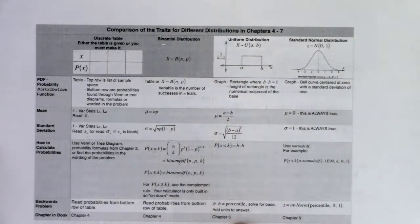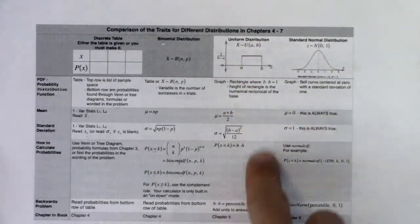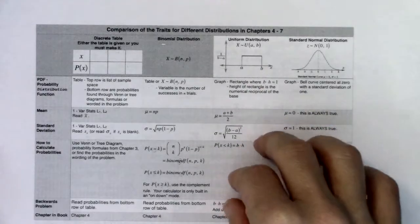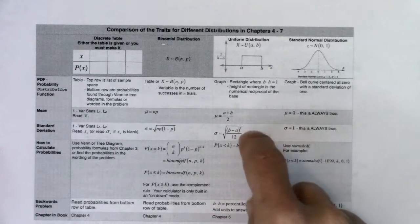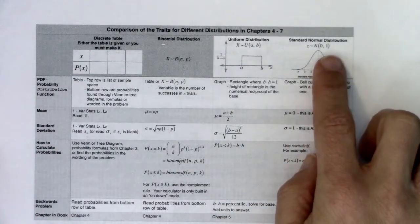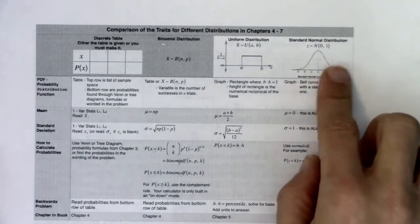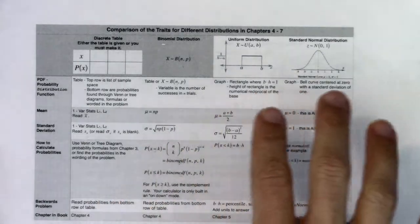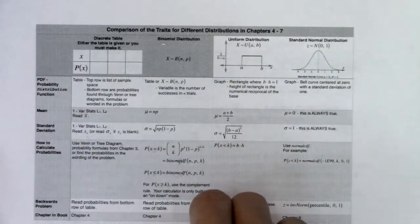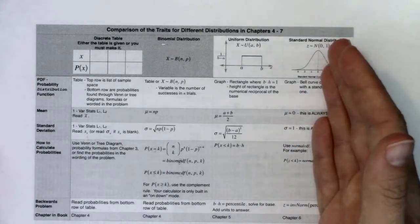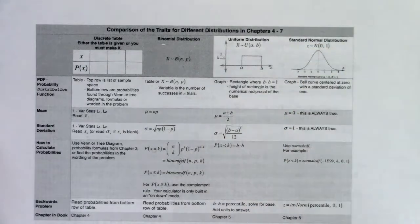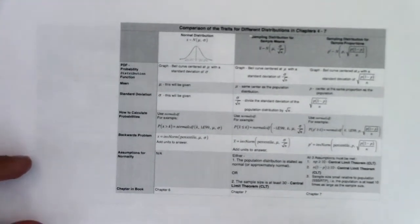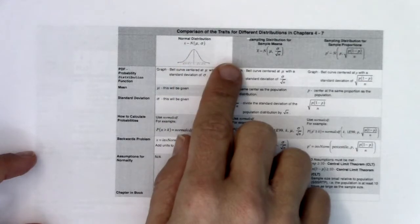So the uniform distribution is the chapter 5 distribution. It's by no means the only continuous random variable distribution - there's exponential, hypergeometric, and all sorts - but we're just going to focus on the uniform. Then in chapter 6 we pick up the standard normal distribution. This has to do with z-scores, which you might vaguely remember from chapter 2. The formula was value minus mean over standard deviation, and I mentioned it would come back up in chapter 6. So we're going to have a bell curve with z-scores on the x-axis.